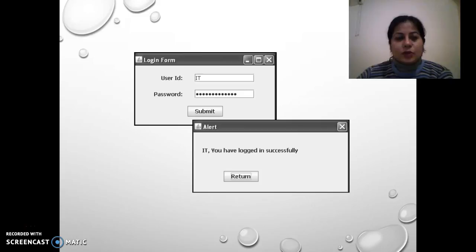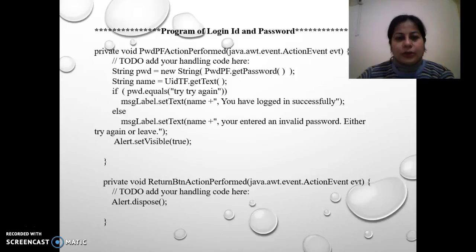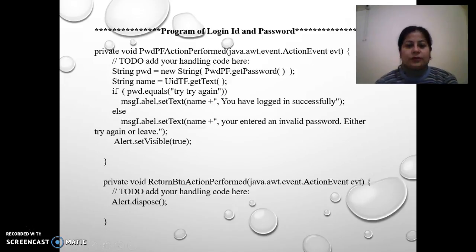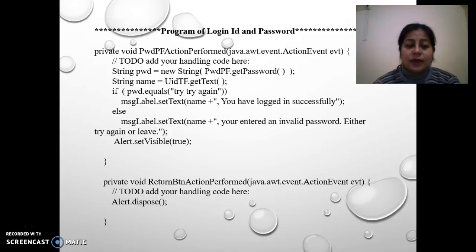I'll be showing you the code on a small screen — since typing would not be clear, I've typed and copied the code here so it should be visible and clear. In NetBeans, we write the function as private void, and the function name — written on the button — is PWD_PF_actionPerformed.